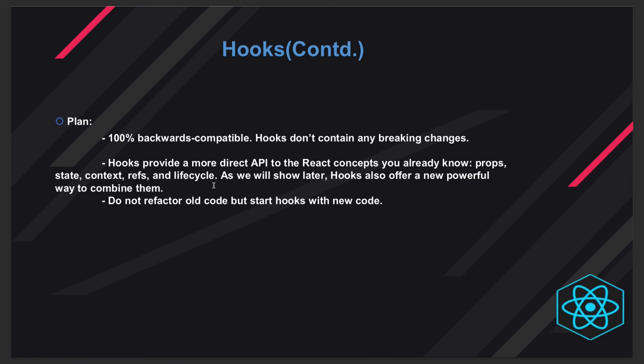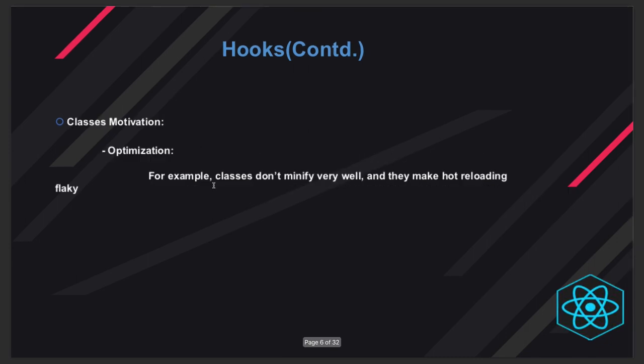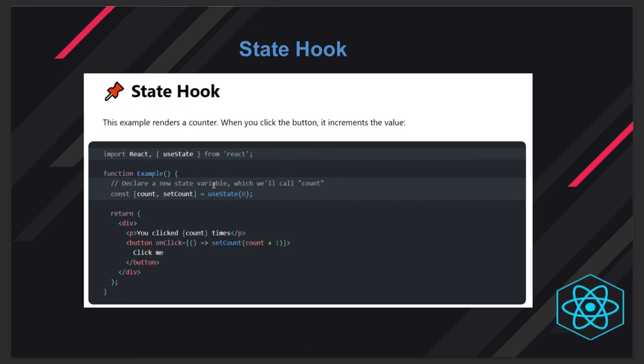The objective of creating hooks for functional components is to simplify things that looked complicated with classes. Another motivation is separation of concerns — hooks are capable of isolating functional logic outside as separate independent functions, and you can write custom hooks. Also, classes don't minify very well, but since you are now writing just functions, your package size will also get reduced. The first hook we'll talk about is the useState hook.